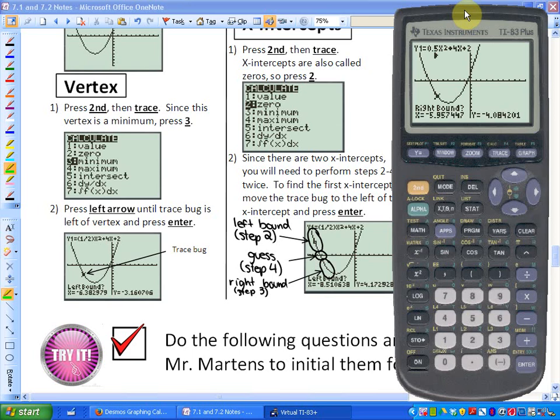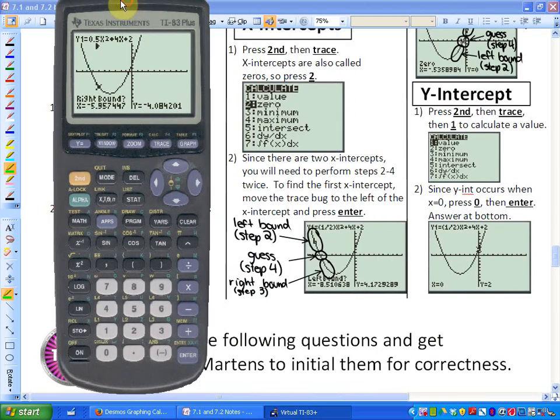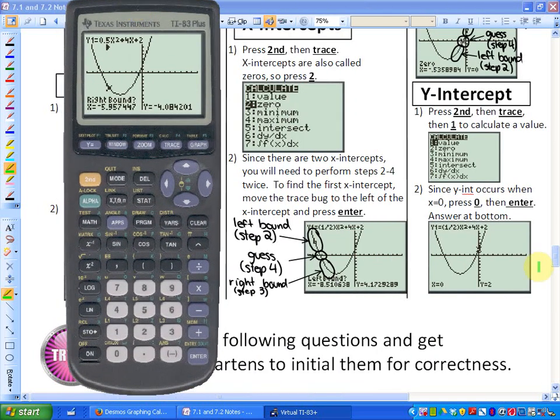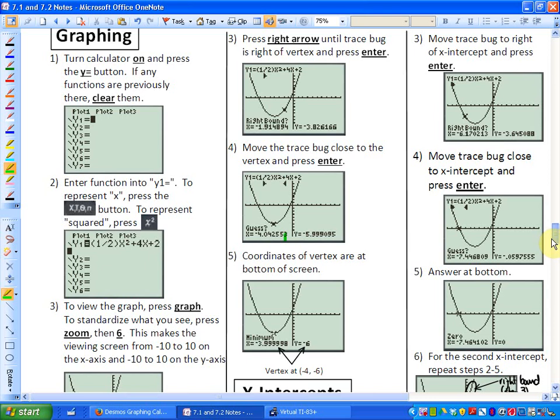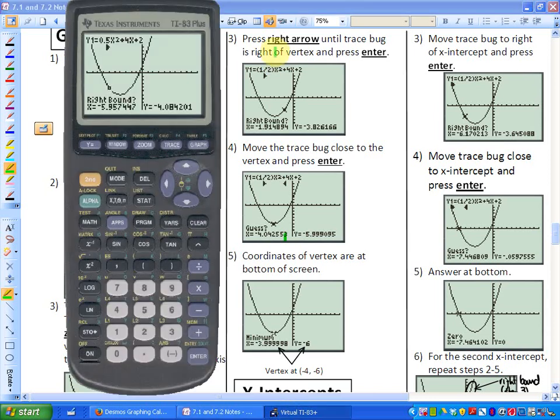So that is the first thing I'm doing. Next, I'm going to go up to the top of the page. So if you're in my class, you have the study guide out. Step 3 says press the right arrow until the trace bug is to the right of the vertex and press enter. So you should be seeing right boundary. So I'm going to keep pressing the right button here. To the right and hit enter.